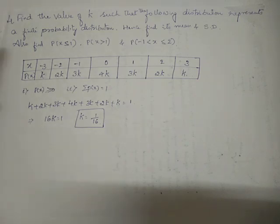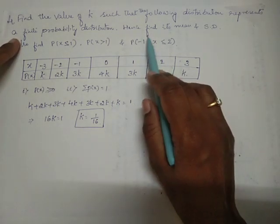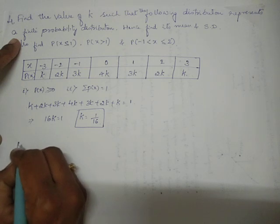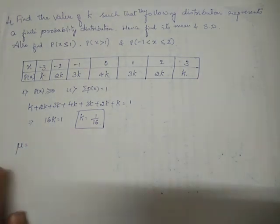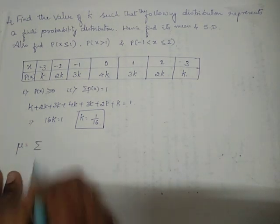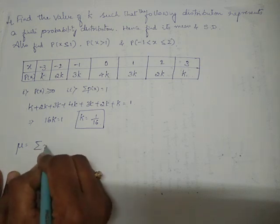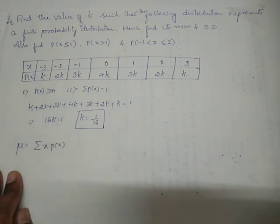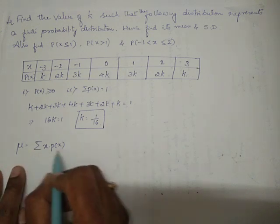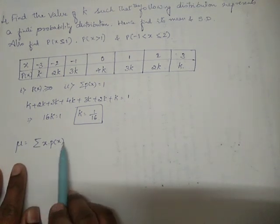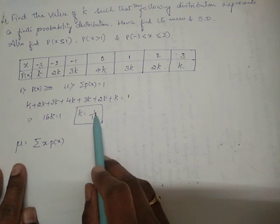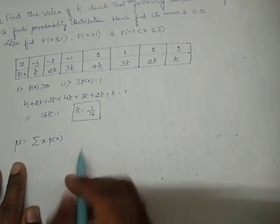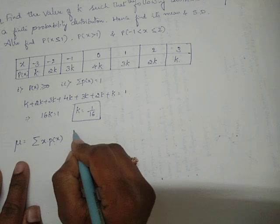The first part is done. Now they are asking us to find the value of the mean. The formula for mean is: μ = summation of x · P(X). Before solving this, we have to substitute the value of k into the table, so let me redraw this table once again.